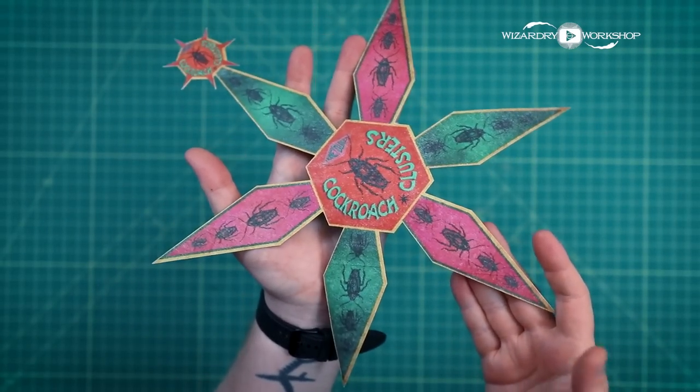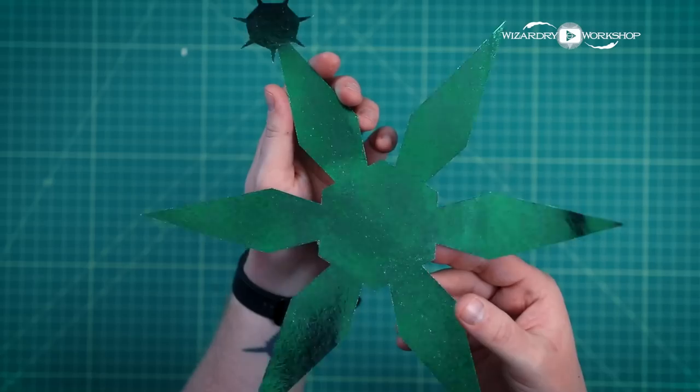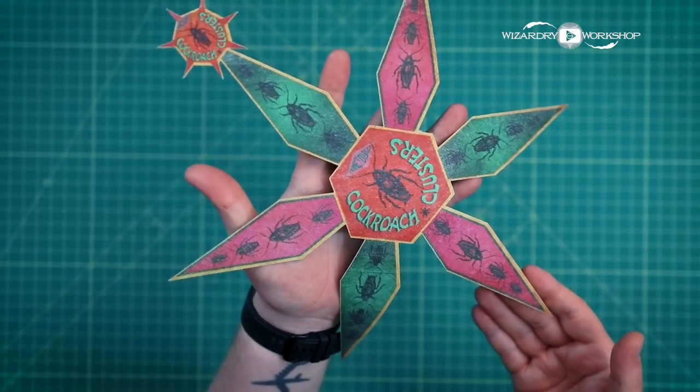Once it's all cut out, it should look like this. Green foil on one side and the print on the other.